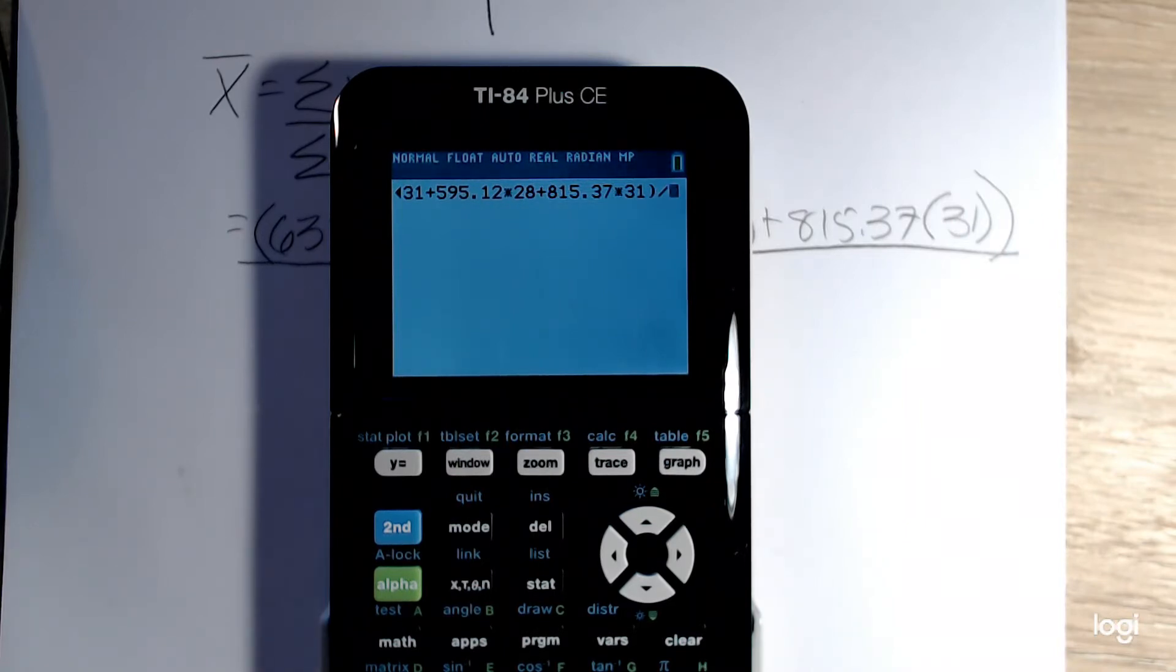Otherwise, it'll just divide by that first term in the denominator and treat everything else separately and add it to the fraction afterwards. So again, opening up a set of parentheses, I have 31 plus 28 plus 31 and close parentheses. And then I want to push enter.